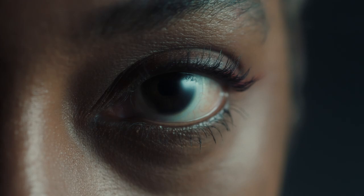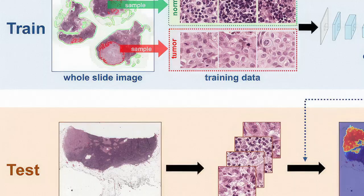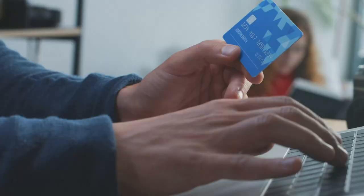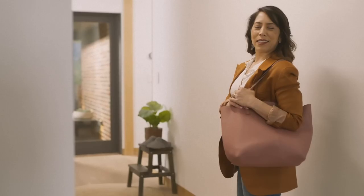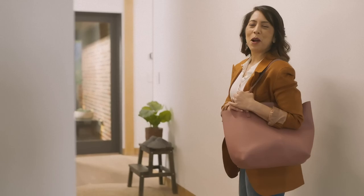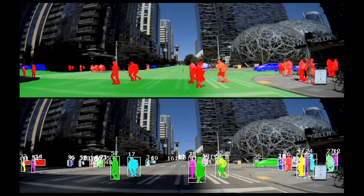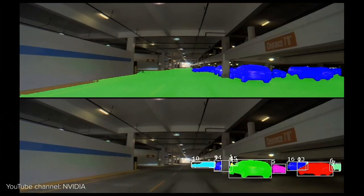Deep Learning had shown great results in medicine identifying diseases on medical images, in finance and e-commerce to uncover fraudulent transactions, and in virtual assistants like Siri or Alexa to understand human speech. One of the most prominent Deep Learning advancements was detecting humans, cars, and road signs in self-driving cars.